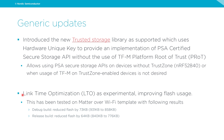We've added link time optimization as an experimental feature, with the goal of improving flash usage for any firmware build. For the Matter over Wi-Fi template sample, a debug build reduced flash by 73 kilobytes — from 931KB down to 858KB. The release build reduced it by 64 kilobytes, from 840KB down to 776KB. That's roughly 5–10% savings. It's introduced as experimental, so be aware of that status when using it.